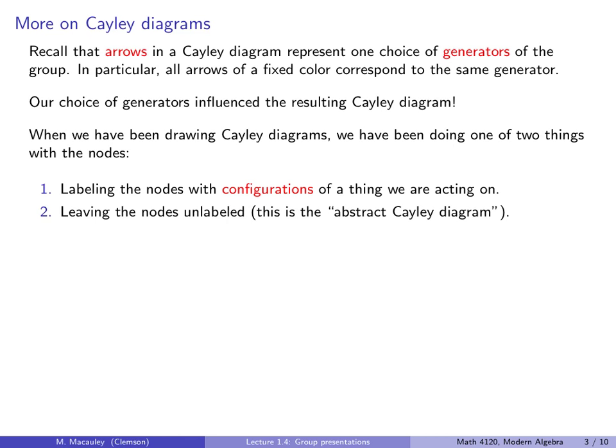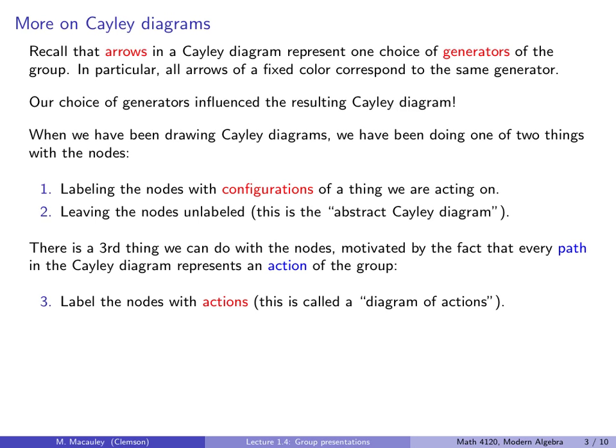When we have been drawing Cayley diagrams, we have been doing one of two things with the nodes. First, we have been labeling the nodes with configurations of a thing we are acting on. Secondly, sometimes we leave the nodes unlabeled. We might call this the abstract Cayley diagram. Now there is a third thing we can do with the nodes, and this is motivated by the fact that every path in the Cayley diagram represents not only a configuration of the thing we are acting on, but an action of the group. We can label the nodes with actions, and we might call this a diagram of actions.